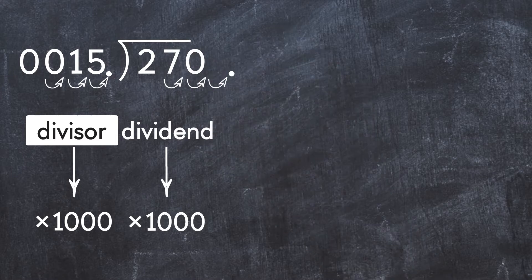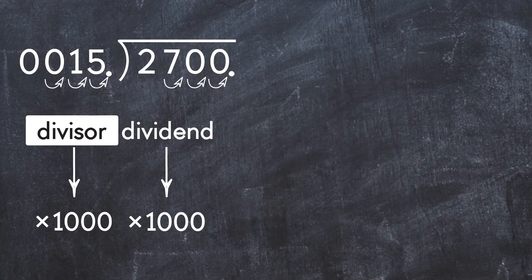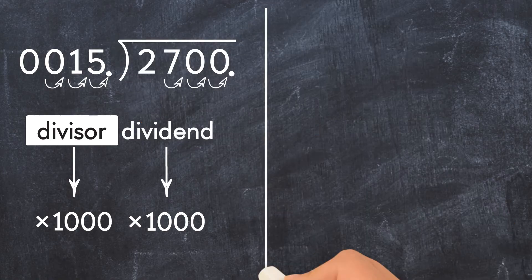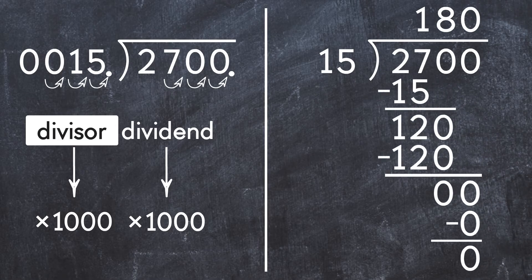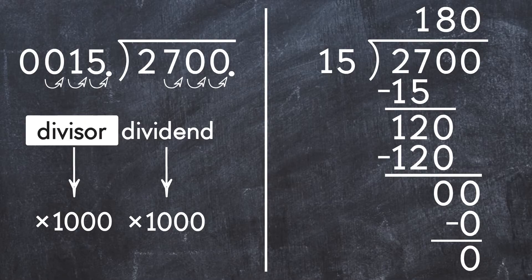So we have 2,700 divided by 15. We solve using long division and we get 180. So 2.7 divided by 0.015 equals 180.